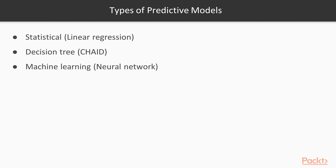The main thing to remember is that whether we're talking about statistical, decision tree, or machine learning predictive models, they can all be used with either a categorical or a continuous outcome variable. In the upcoming videos, we'll use a statistical model for a continuous outcome and decision tree and machine learning models for a categorical outcome — though all model types work regardless of the outcome variable type.